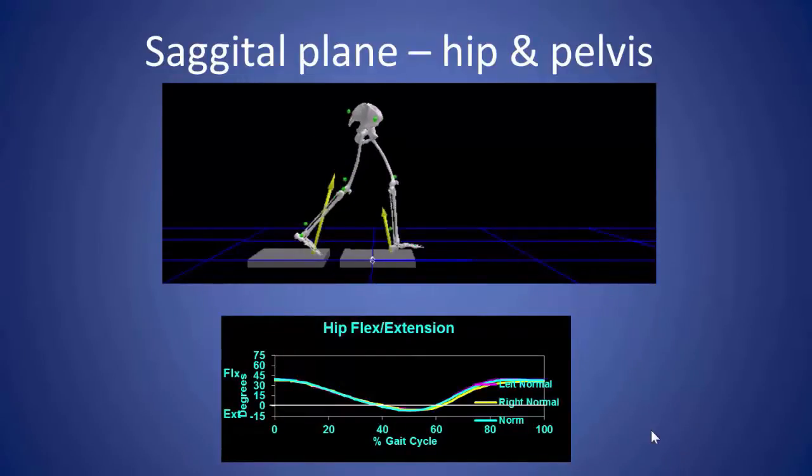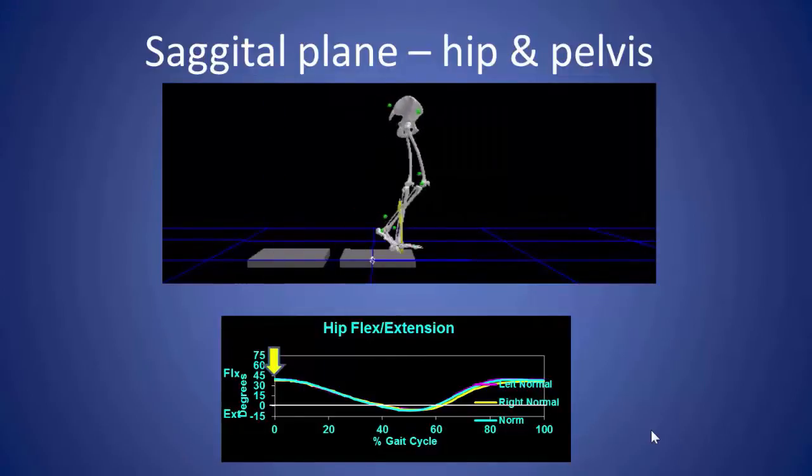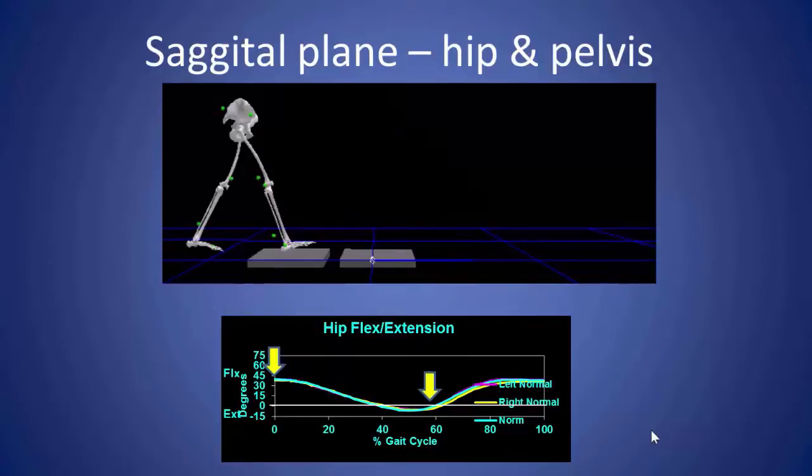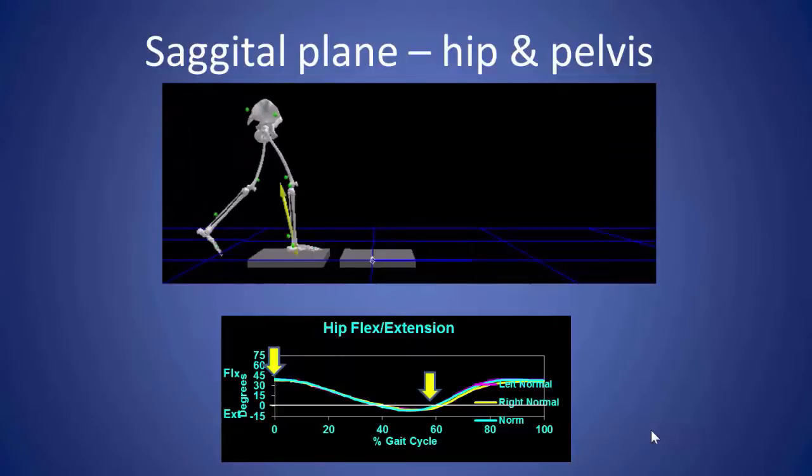And here it is graphically represented. You can see at the beginning of the gait cycle at foot strike, the hip is in maximum flexion, and progresses to maximum extension until it flexes through swing phase.